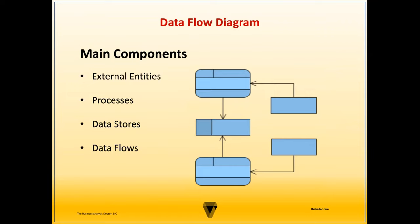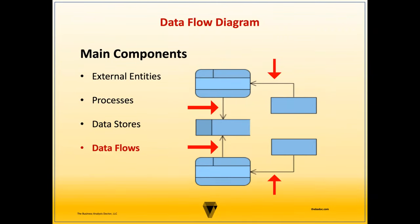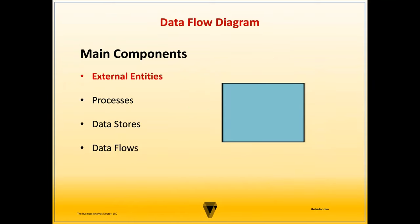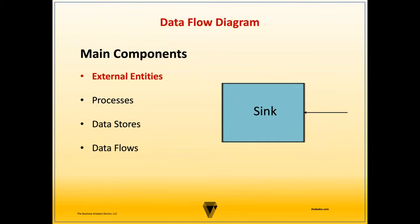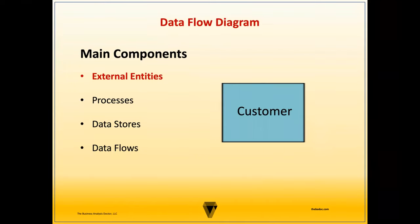The main components of a data flow diagram include external entities, processes, data stores, and data flows. External entities are outside objects that interact with the system — a person, organization, or another system. A source is an entity that provides input to a process, with data flows pointing away from it. A sink is an entity that is a destination for process outputs, with data flow arrows pointing toward it. An external entity can be both a source and a sink. External entities should always be labeled as a noun — for example, 'customer.'